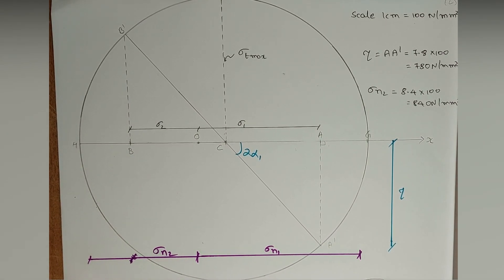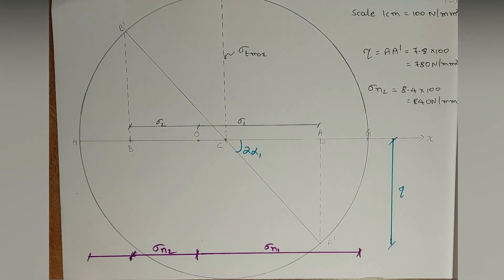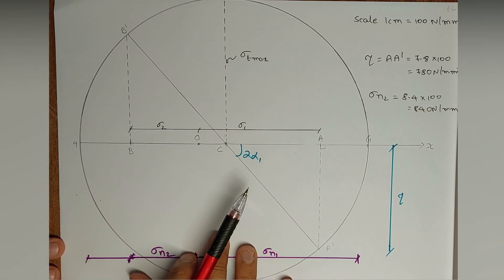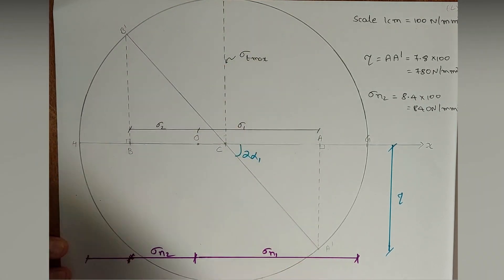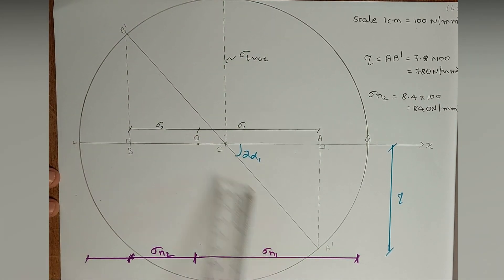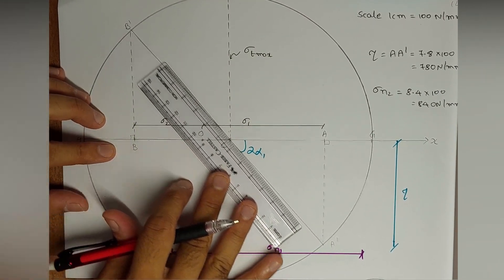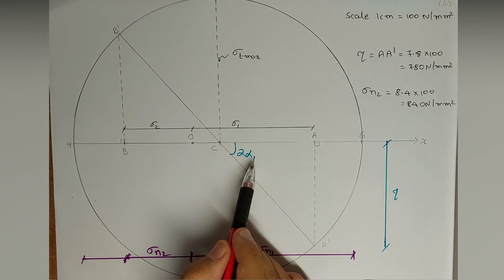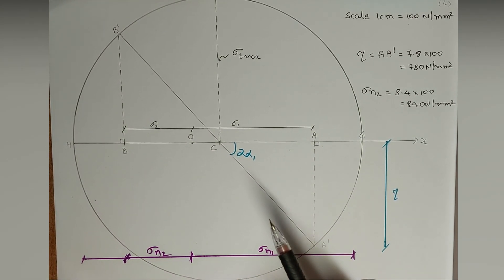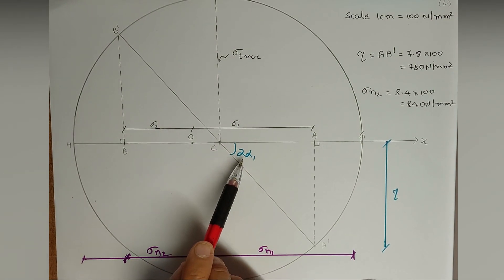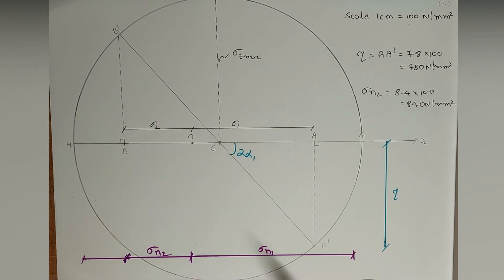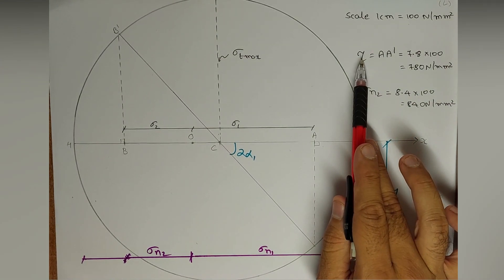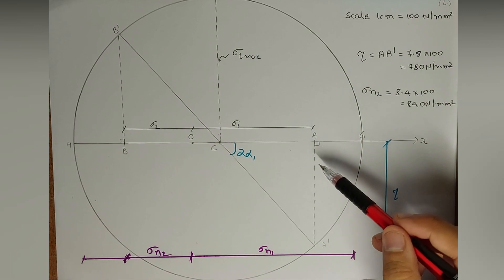Because Sigma 2 is in the opposite direction, we draw a vertical line from B upward at 90 degrees, intersecting the circle at point B dash. Then we draw a straight line joining A dash and B dash. The angle formed gives us 2 times alpha 1, from which we can find the location of the principal plane. Right now, however, we are only concerned with finding tau — the shear stress.